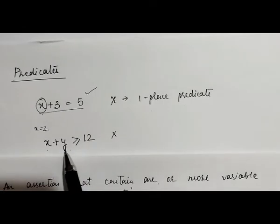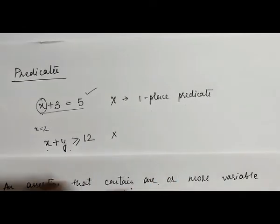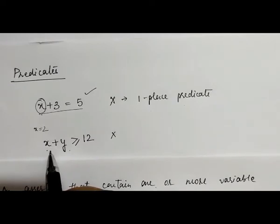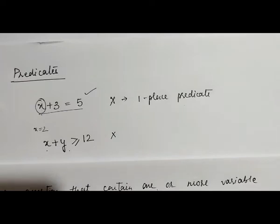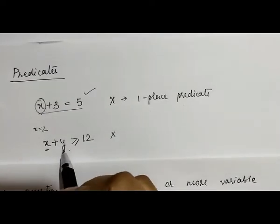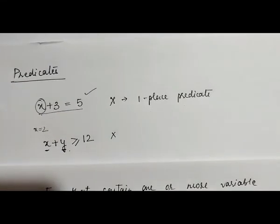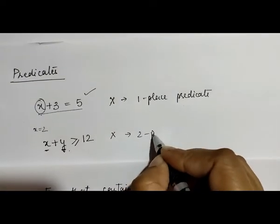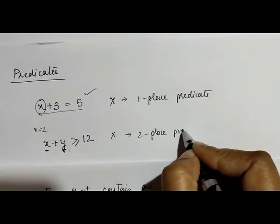For this particular statement, right now this is not a proposition. Why? Because we cannot determine whether this statement is true or false without assigning the value to x and y. There are two values which we are assigning to variable x and variable y. Therefore, this is called two place predicate.